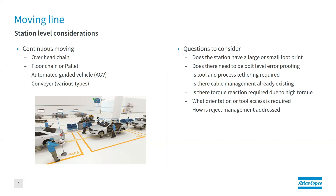For moving lines, questions to consider include: what type of footprint do they have — large or small? Is there any bolt-level error-proofing required? Bolt-level error-proofing on moving lines can be a challenge, but we do have solutions available. Is the tool and process tethered — do we need to keep the tool or operator in the correct location? And cable management: if you have a cable tool, where is the cable going? A cable on the floor creates ergonomic issues and trip hazards, so we need to understand how cabling is managed.